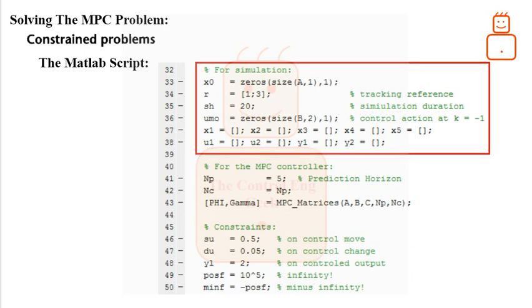Here, the first portion gives some information for the simulation which includes the initial condition, values of the tracking reference and value of the control action at time k−1.